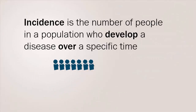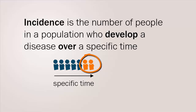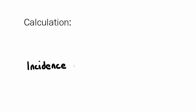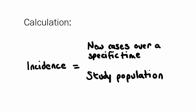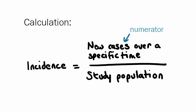Incidence refers to the number of individuals in a population who develop a disease over a specific time. This is a measure of risk that the disease will occur. To calculate the incidence of a disease we need to know two numbers: the study population — the total number of people in the population we are studying — and the number of incident cases, that is the number of new cases that develop the disease during a specific time period. To calculate incidence, we divide the number of new cases by the study population followed up over a specified period of time.